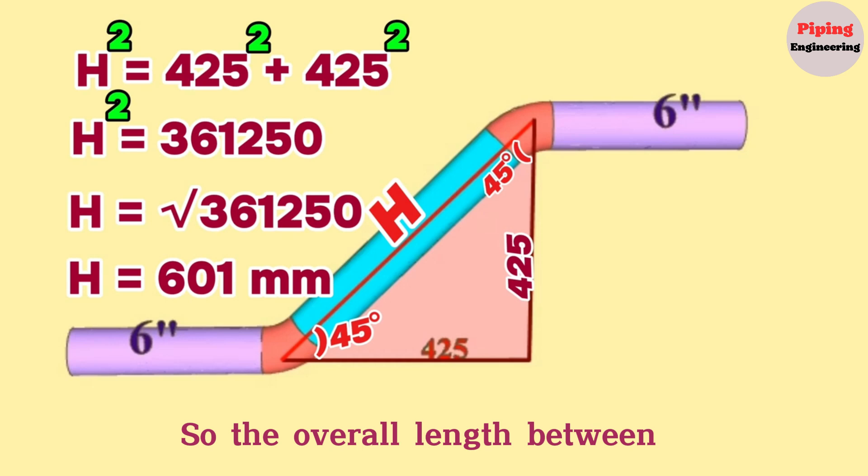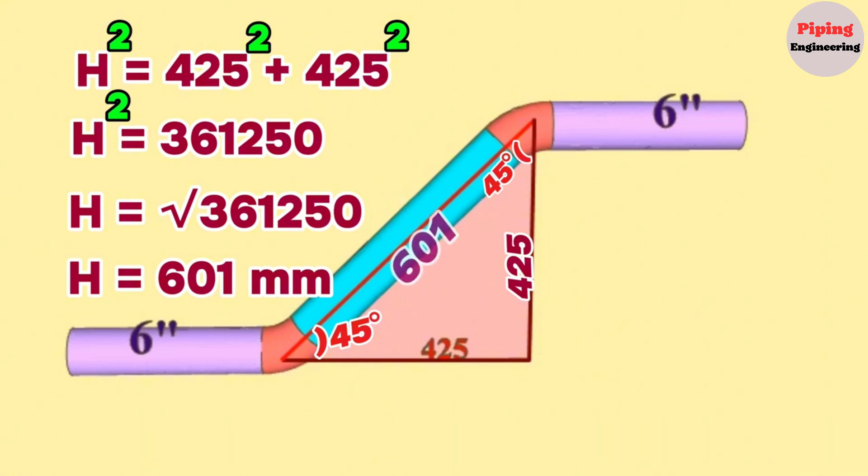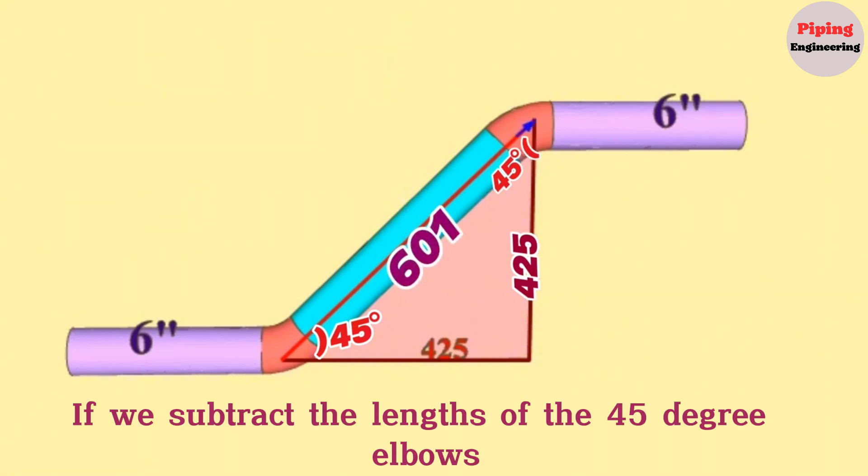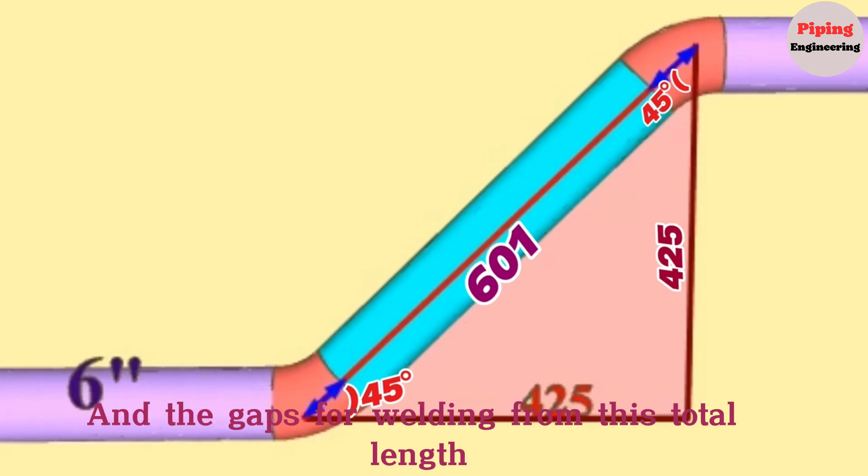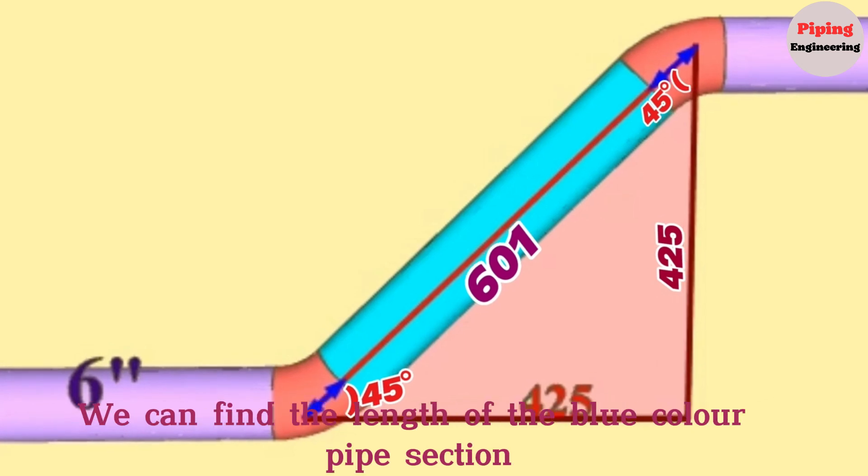So, the overall length between the centers of the 45-degree butt weld elbows is 601 millimeters. If we subtract the lengths of the 45-degree elbows and the gaps for welding from this total length, we can find the length of the blue color pipe section.